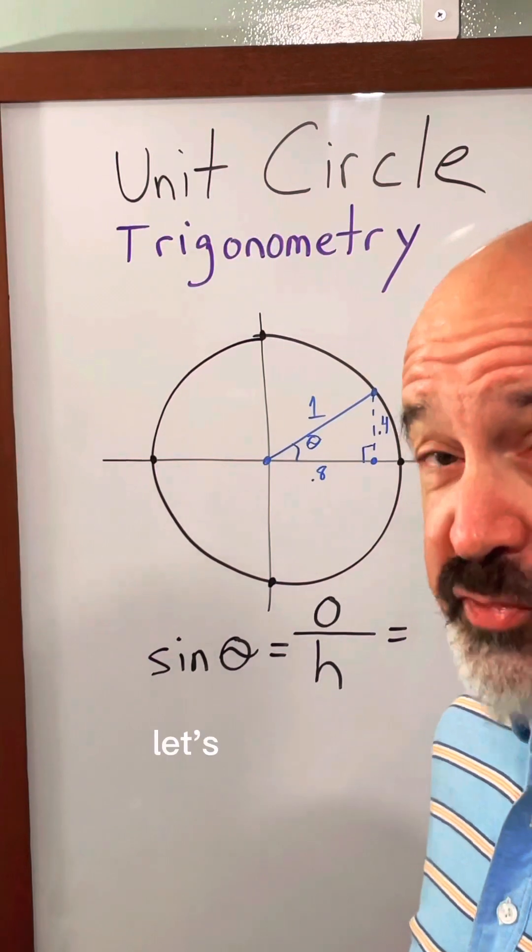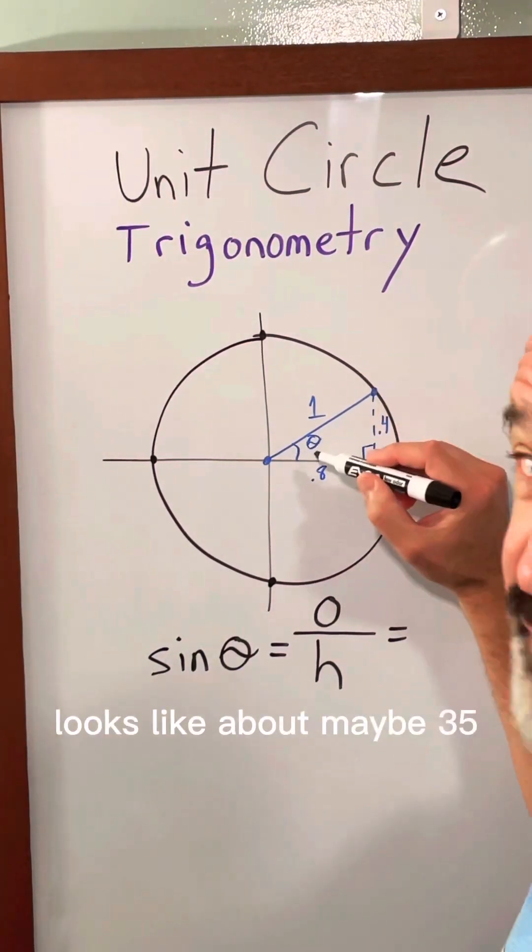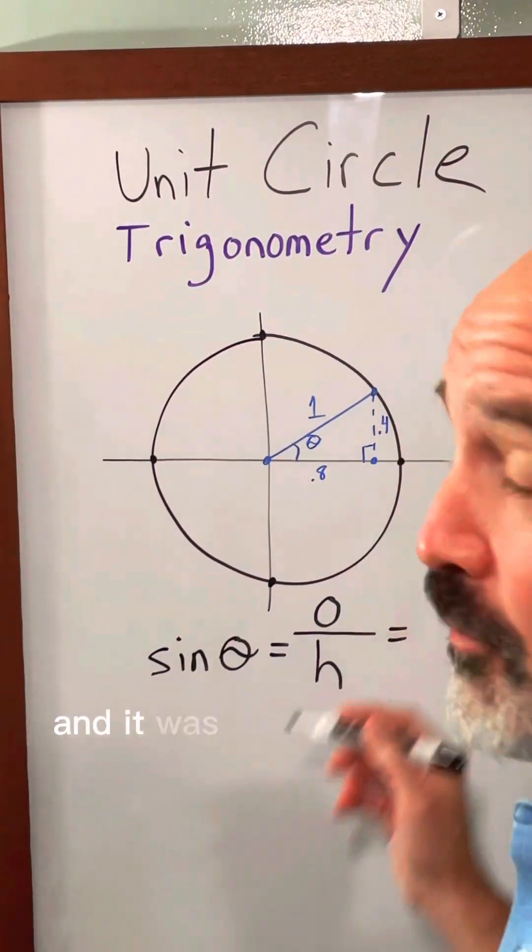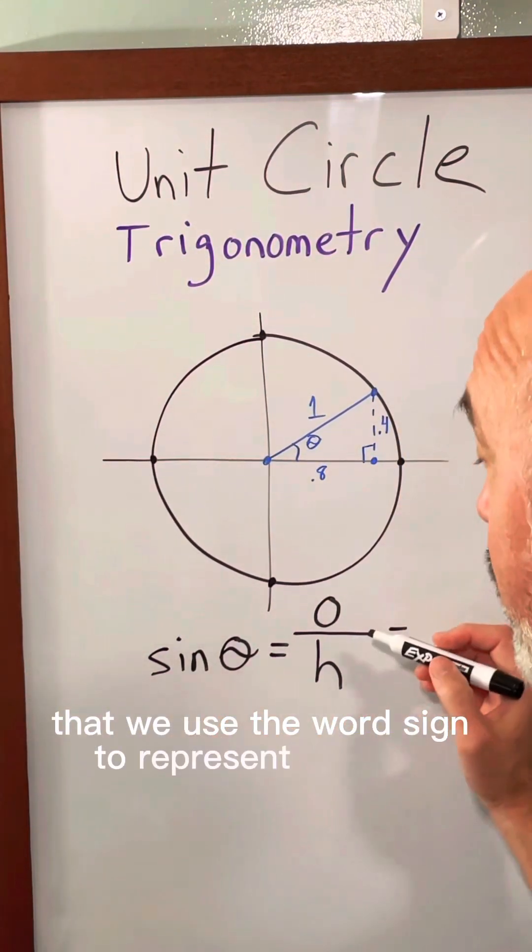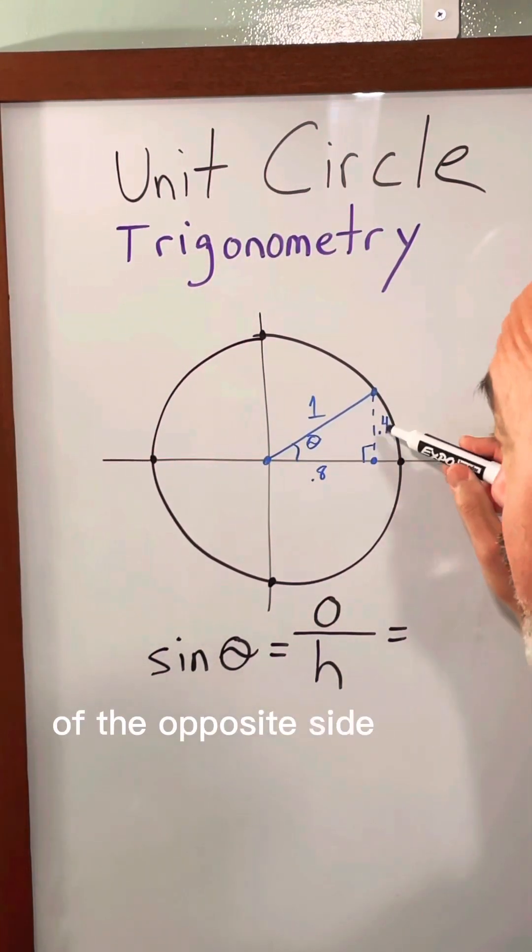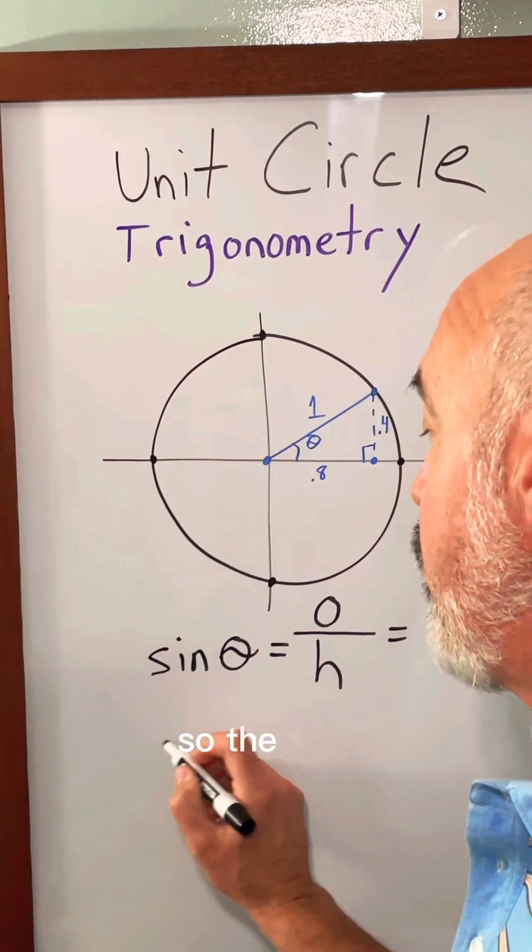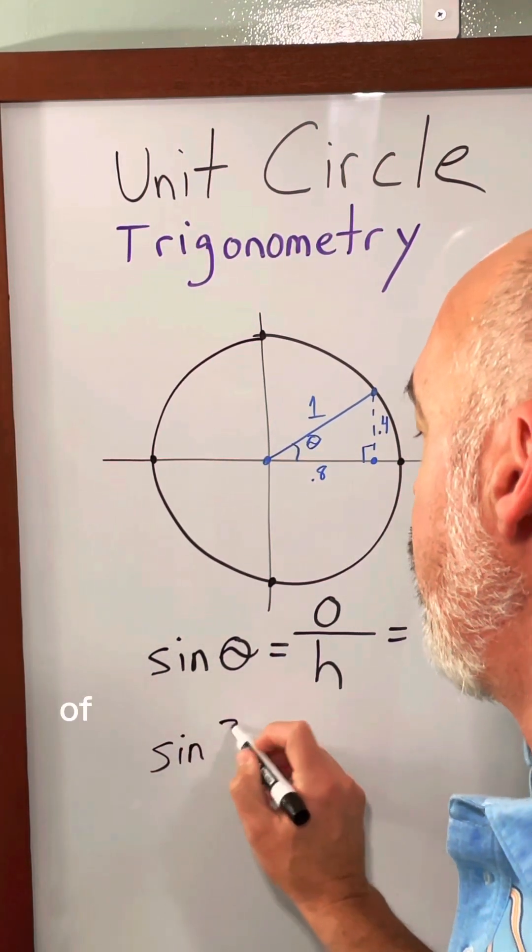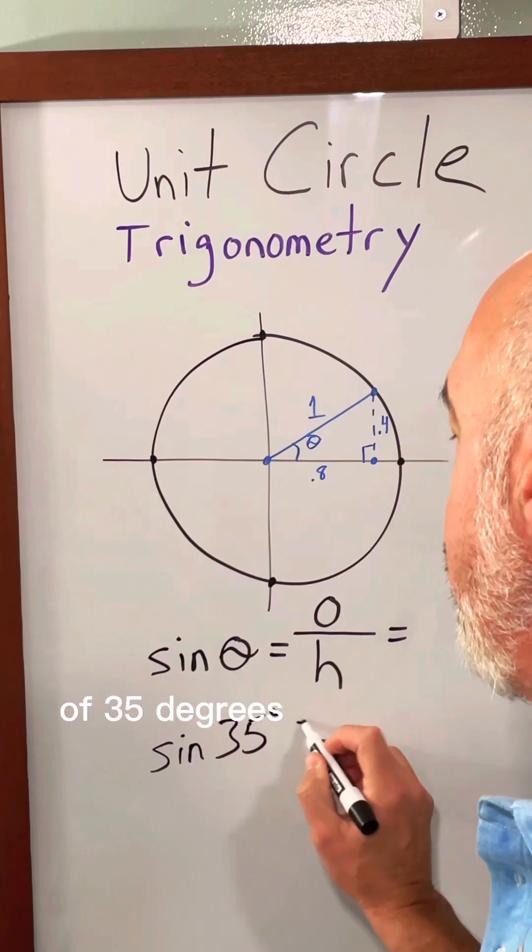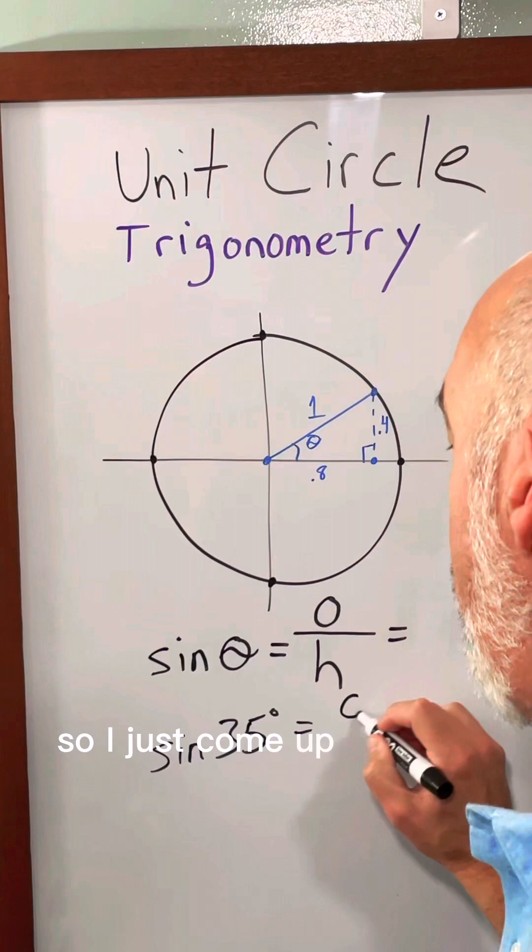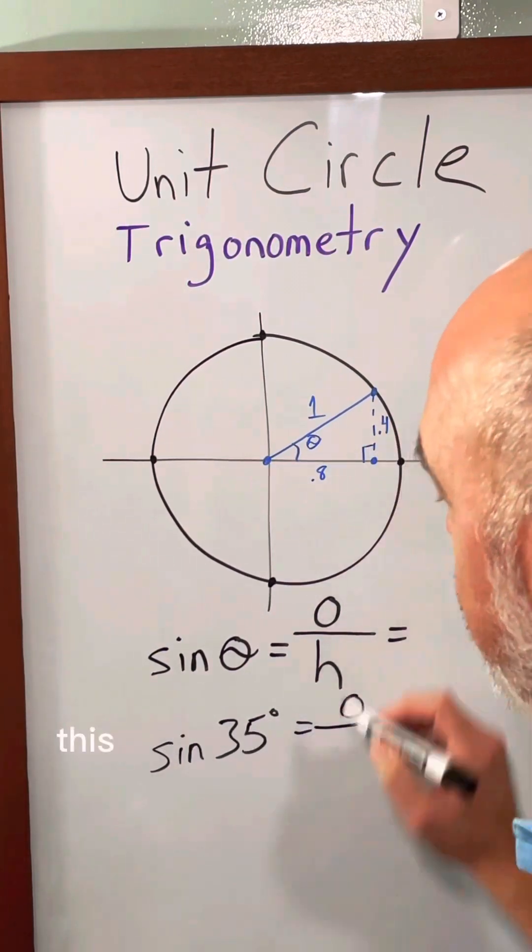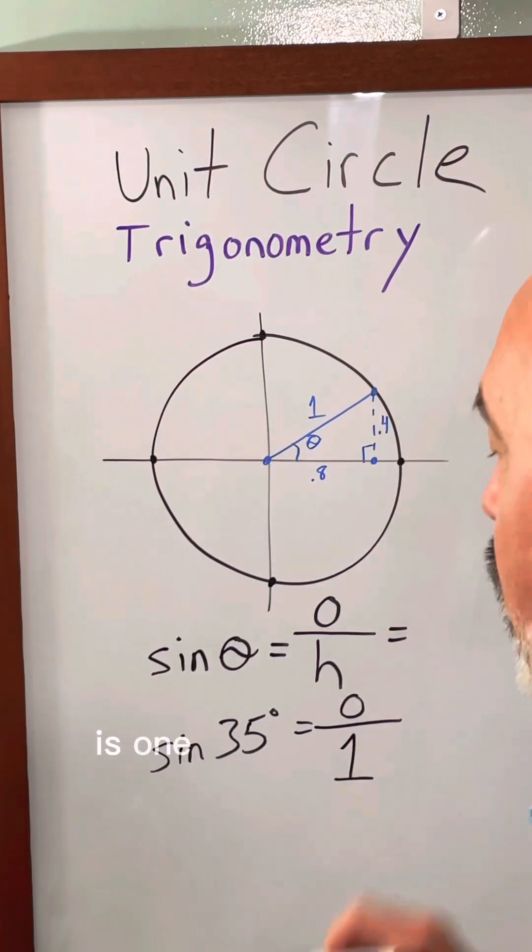In this example let's call theta, it looks like about 35 degrees here, and it was decided a long time ago that we use the word sine to represent the ratio of the opposite side to the hypotenuse. So the sine of 35 degrees equals the opposite, which is what we don't know. I'm guessing it's 0.4 but we'll see. So I'll just put an O and the hypotenuse we definitely know is 1.